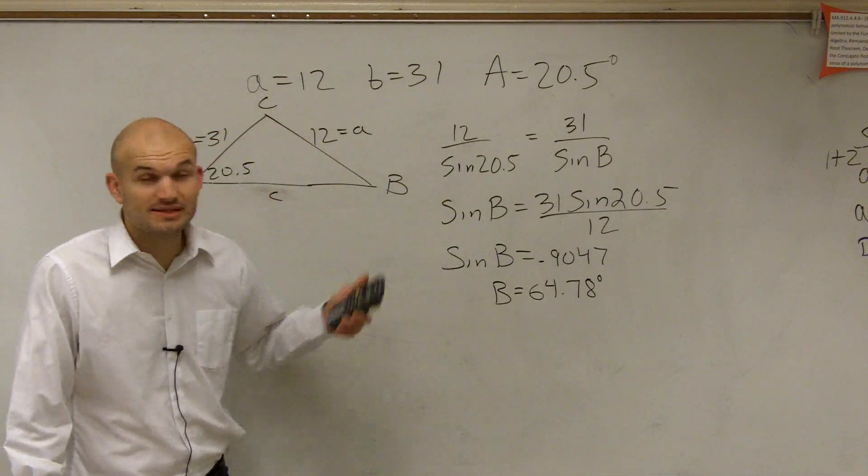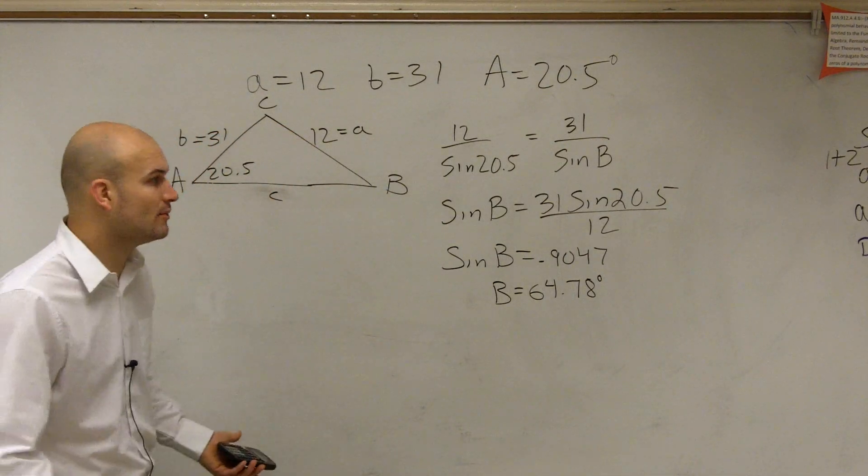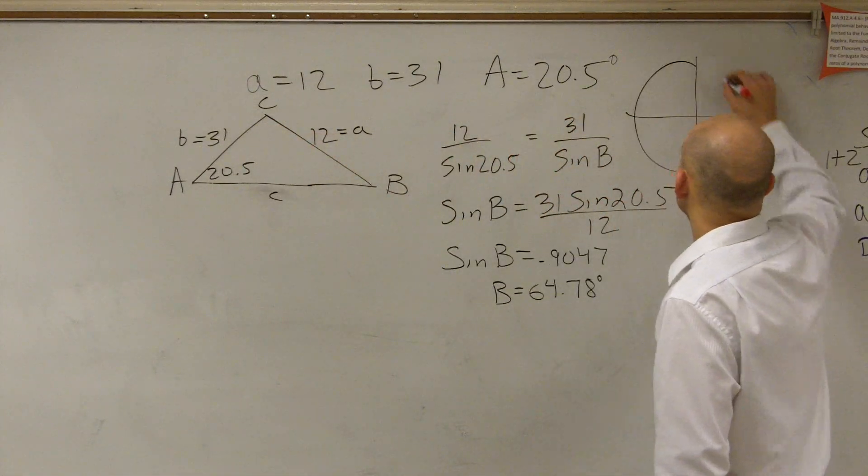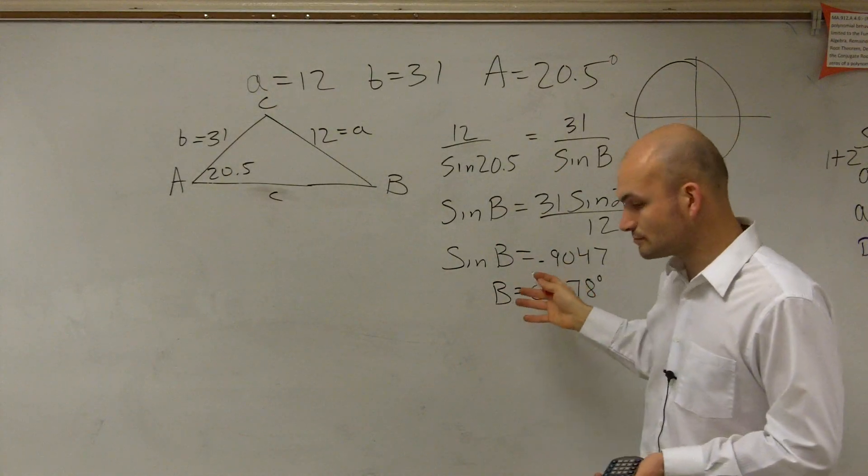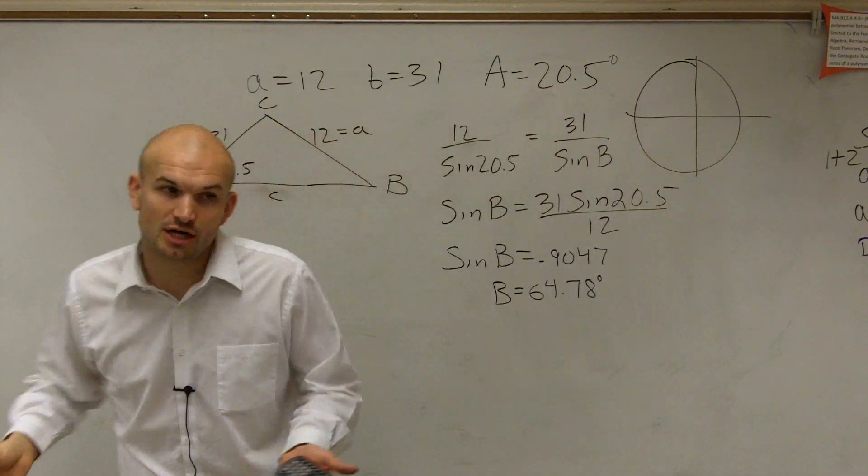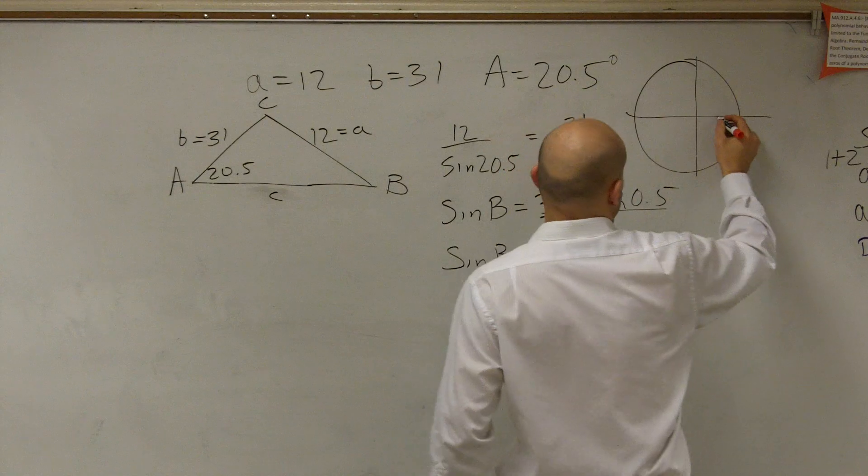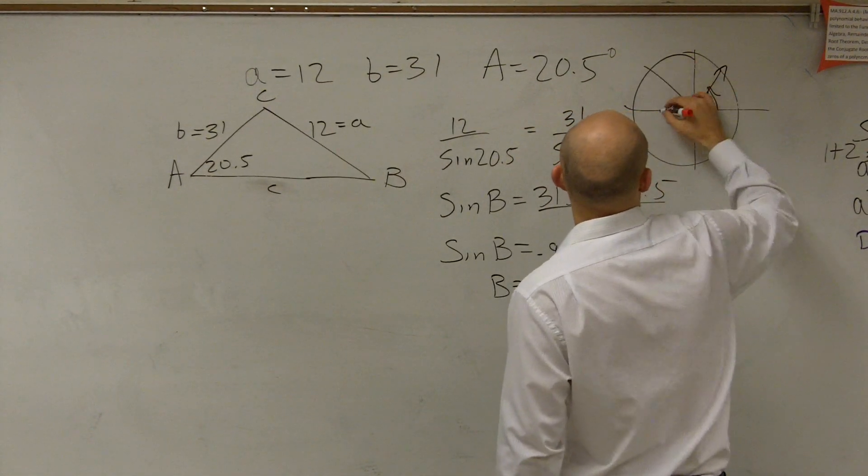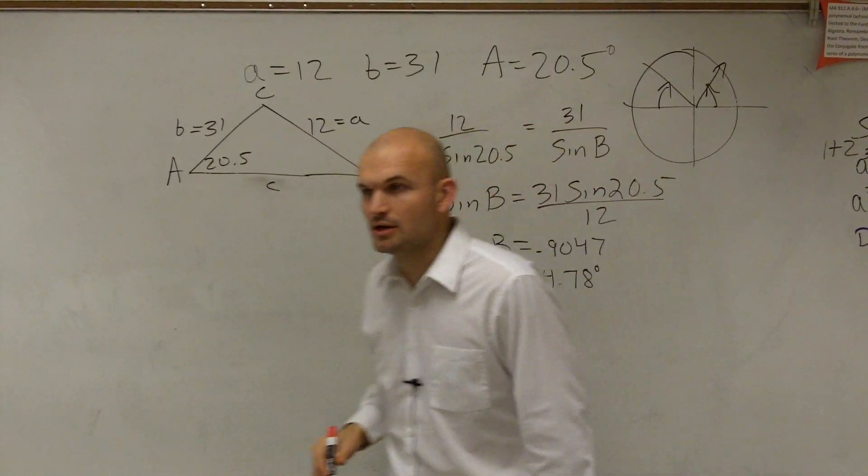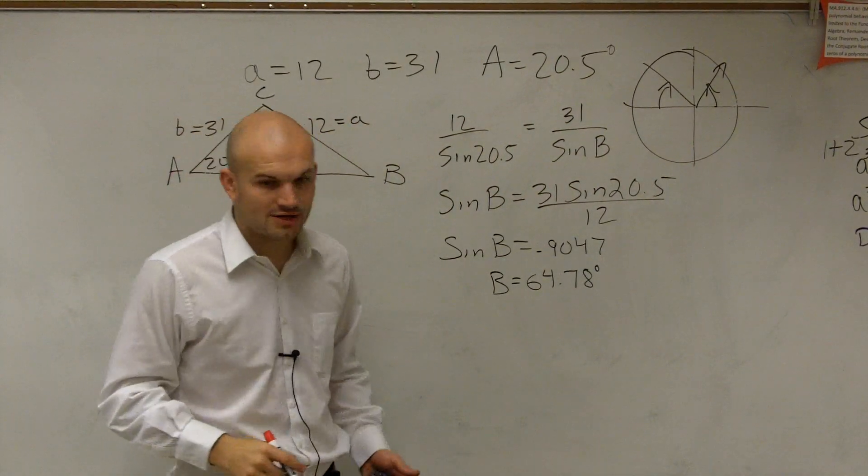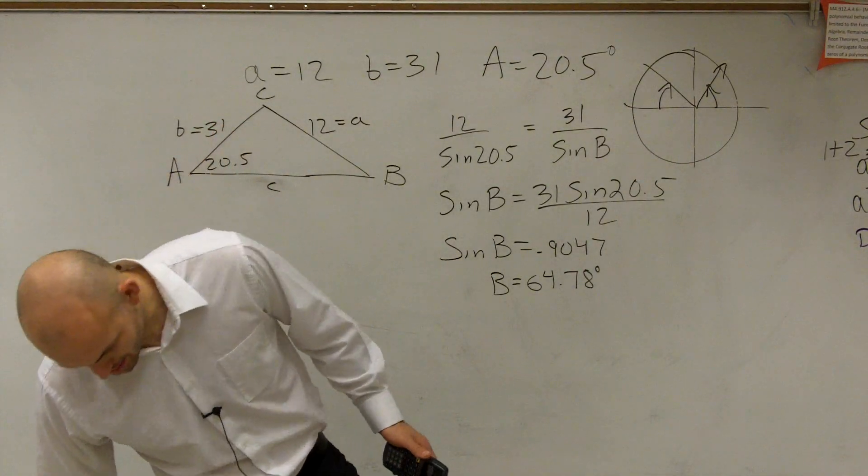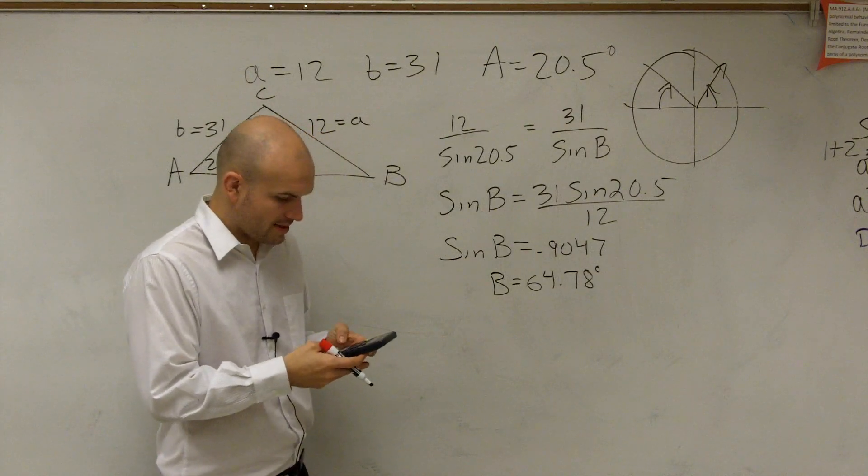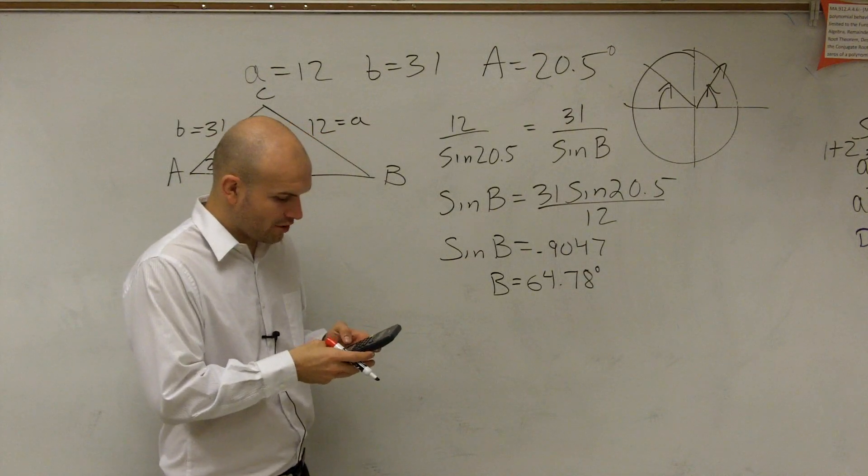So now it could be 64.78 degrees, but remember what I said when I was talking about this, when dealing with your domain of sine, as long as you're taking the inverse, there's a couple angles. You have 64 degrees, but you could also use the reference angle of 64 degrees in your second quadrant.